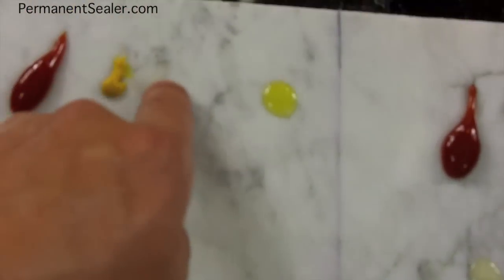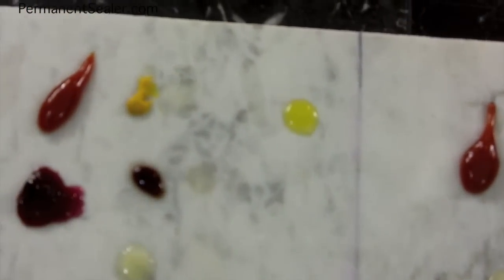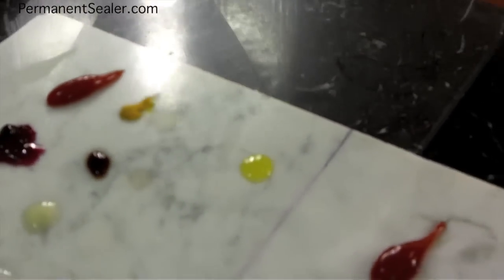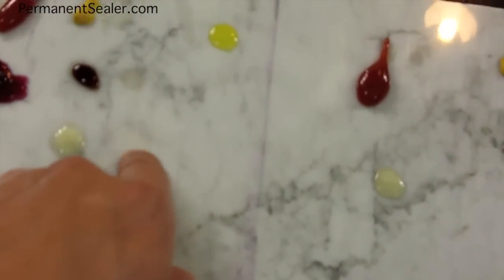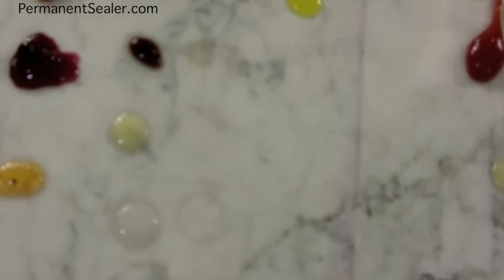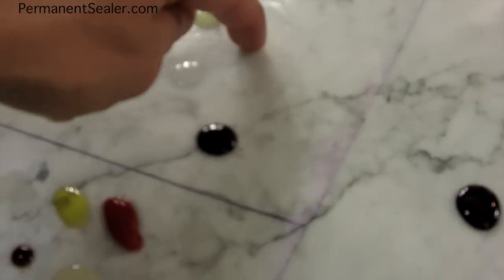Then mustard stained as well. You can see the stain there and then it etched. Same thing for the lemon juice—it's just one big fat etch over there. It really ate away at it, it actually feels rough.